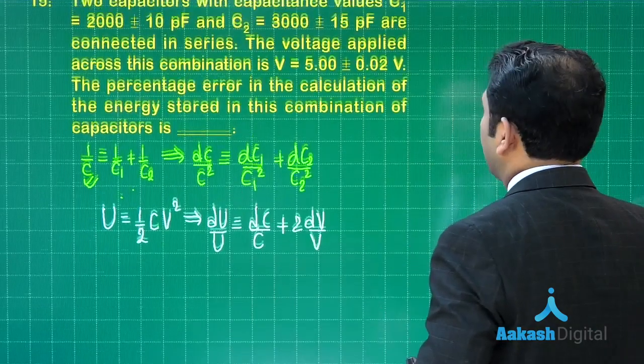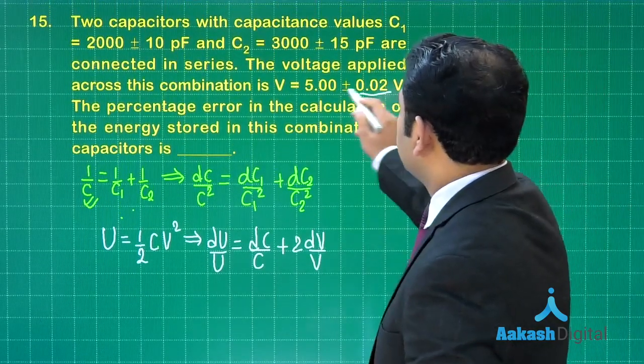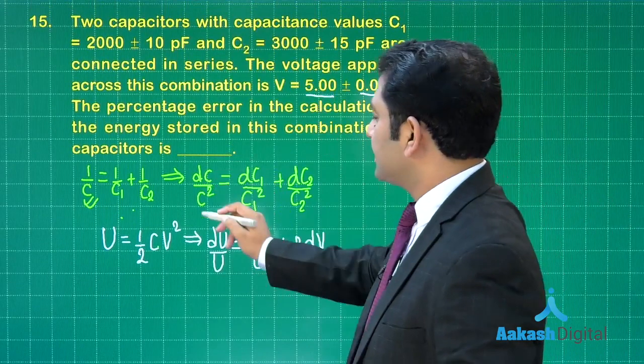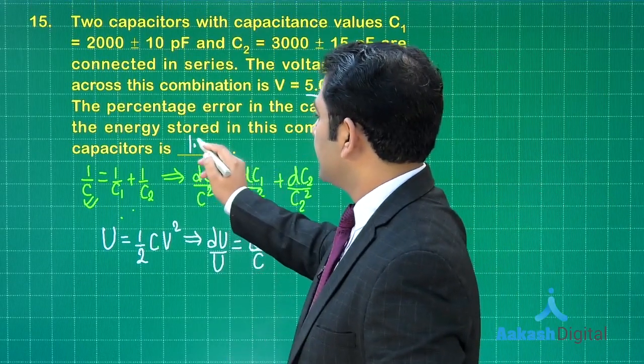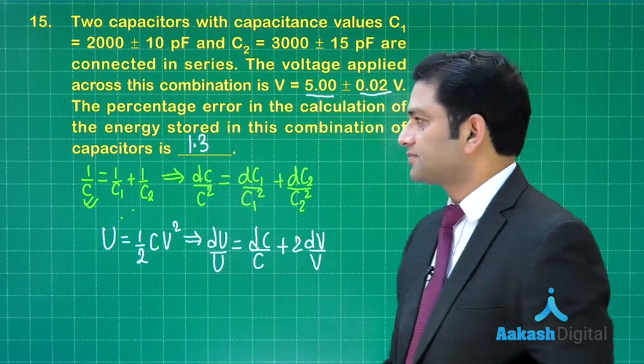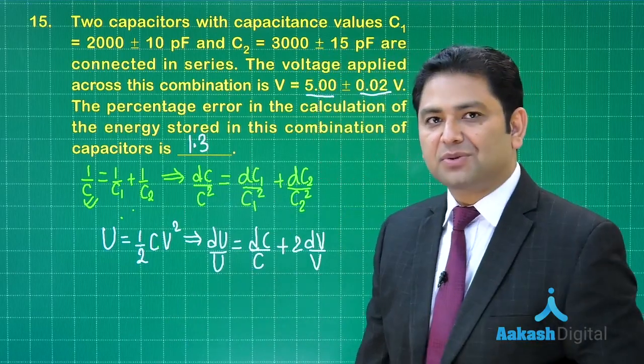So you can now calculate, because dV is this much, V is there, dC by C can be calculated from here. You do that, the percentage error would be 1.3.